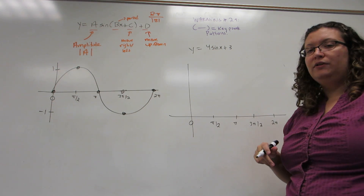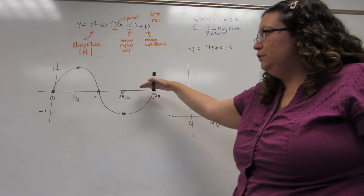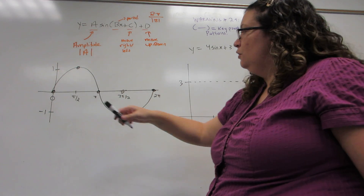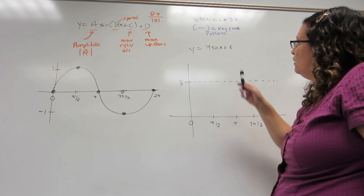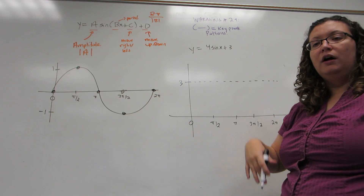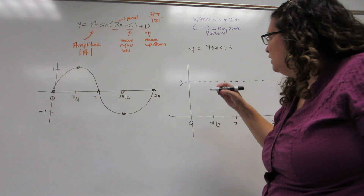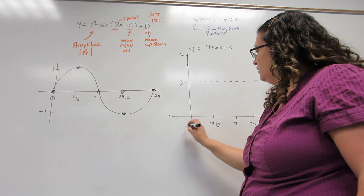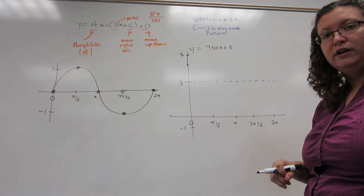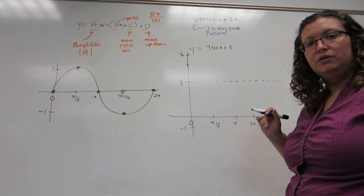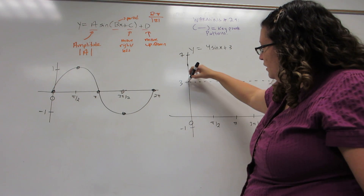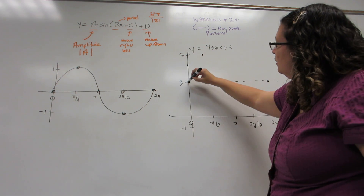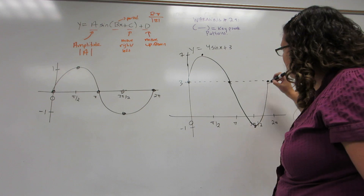The 3 tells us how far up or down we moved the center line of the graph, so our new center is at 3, whereas it used to be at the x-axis. The 4 tells us how far up or down we go from that center to find the high point and the low point. So 3 plus 4 gives us 7 as the high point, and 3 minus 4 gives us negative 1 as the low point. It's always center plus or minus the amplitude to get high and low. Sine starts at the center, goes high, center, low, center. We connect these and we get our sine graph.